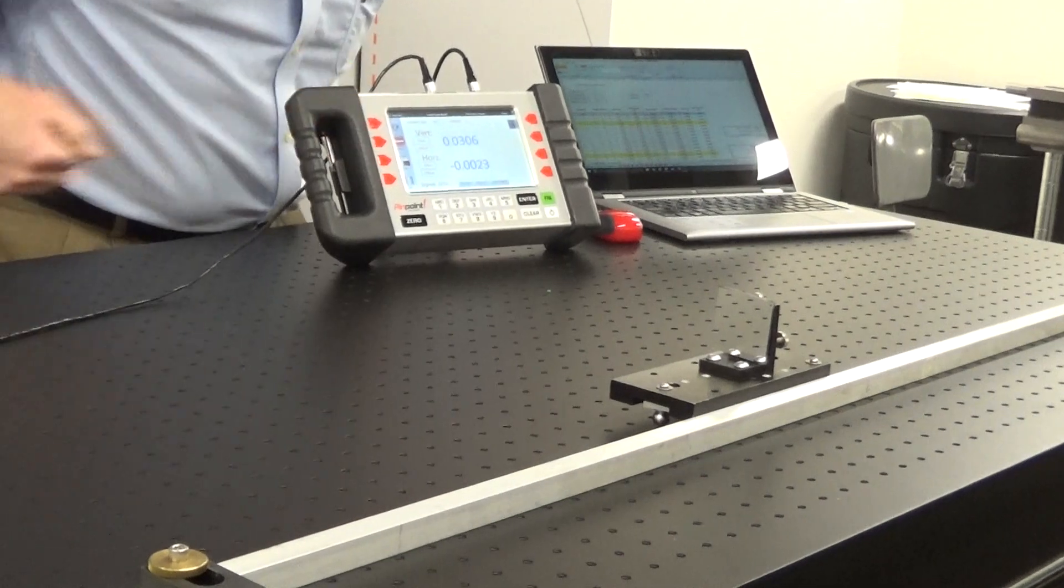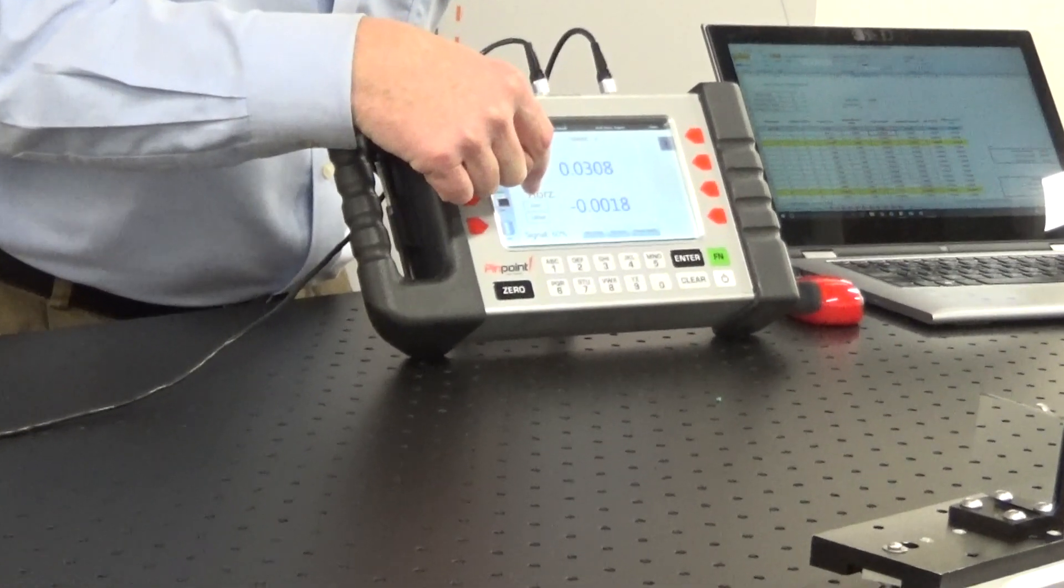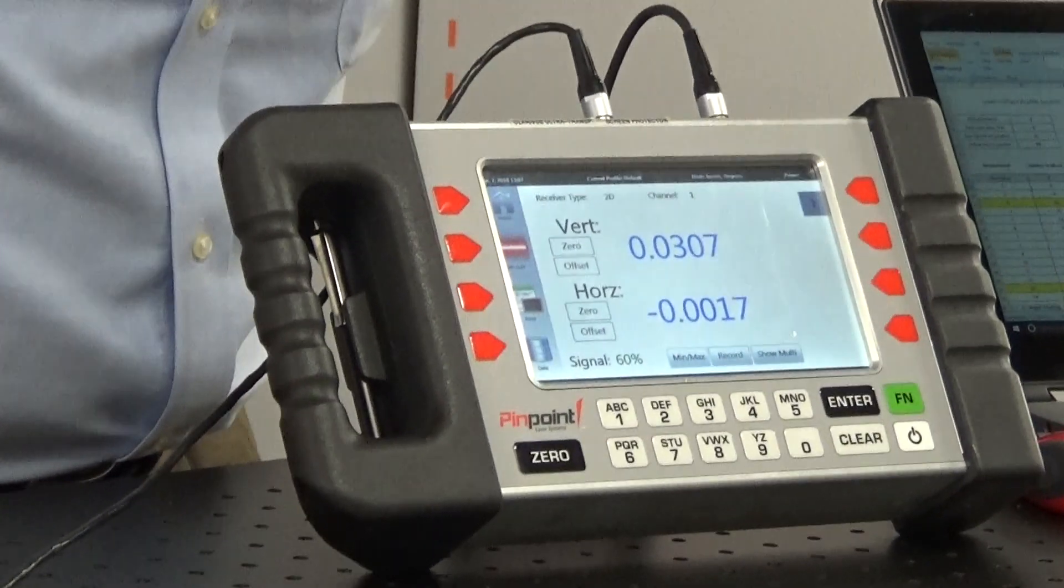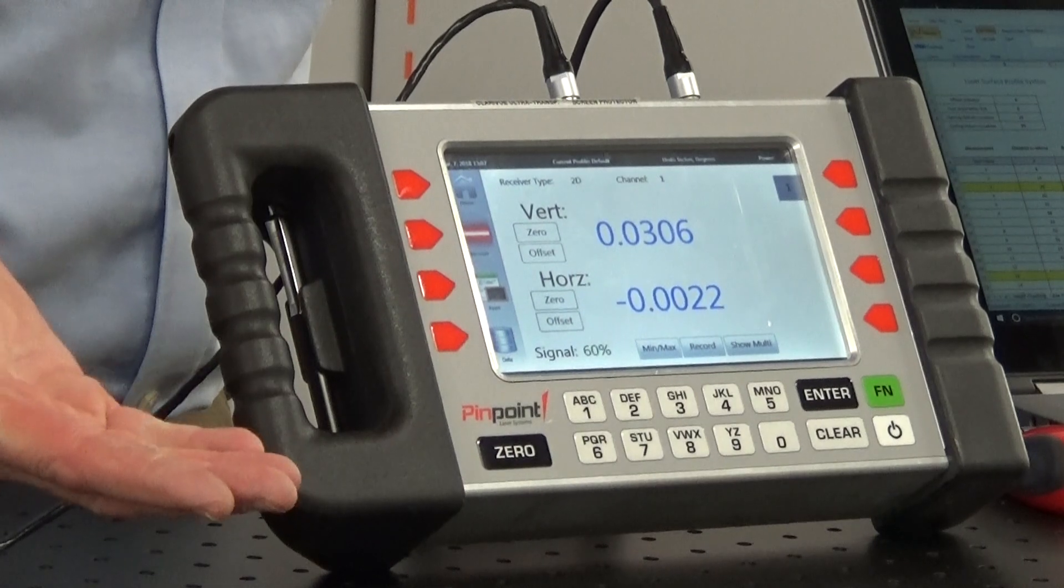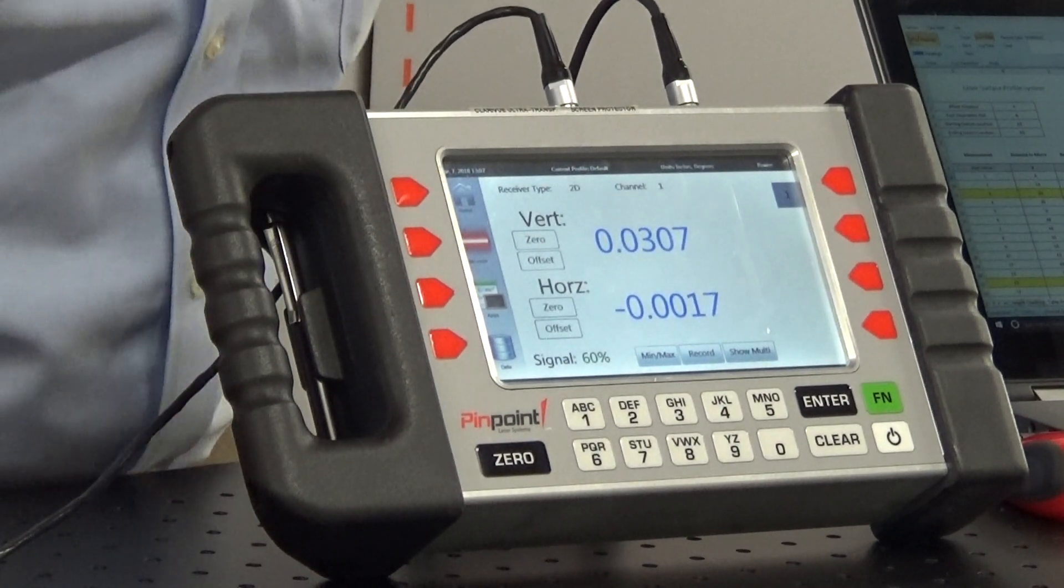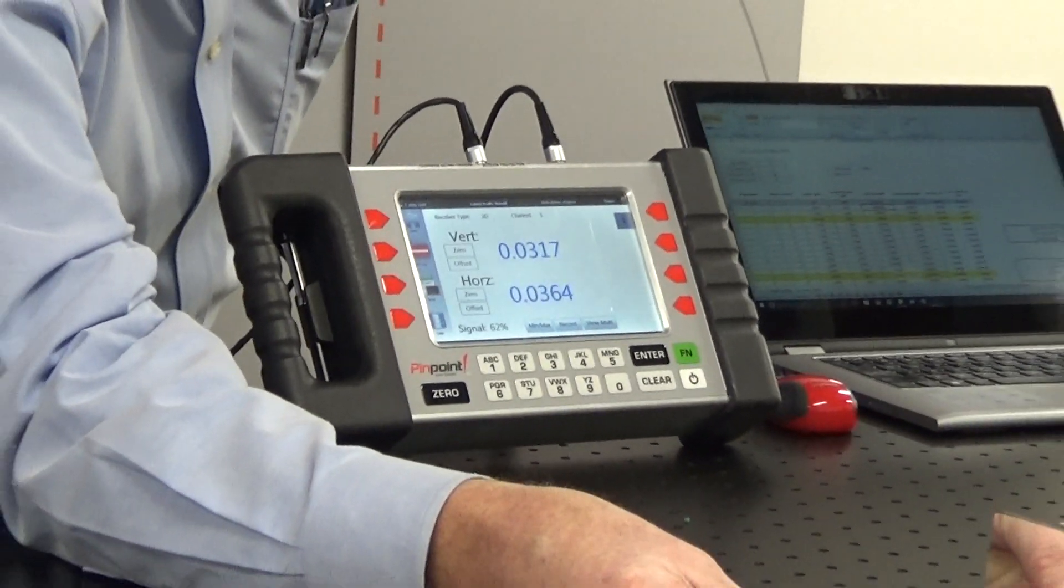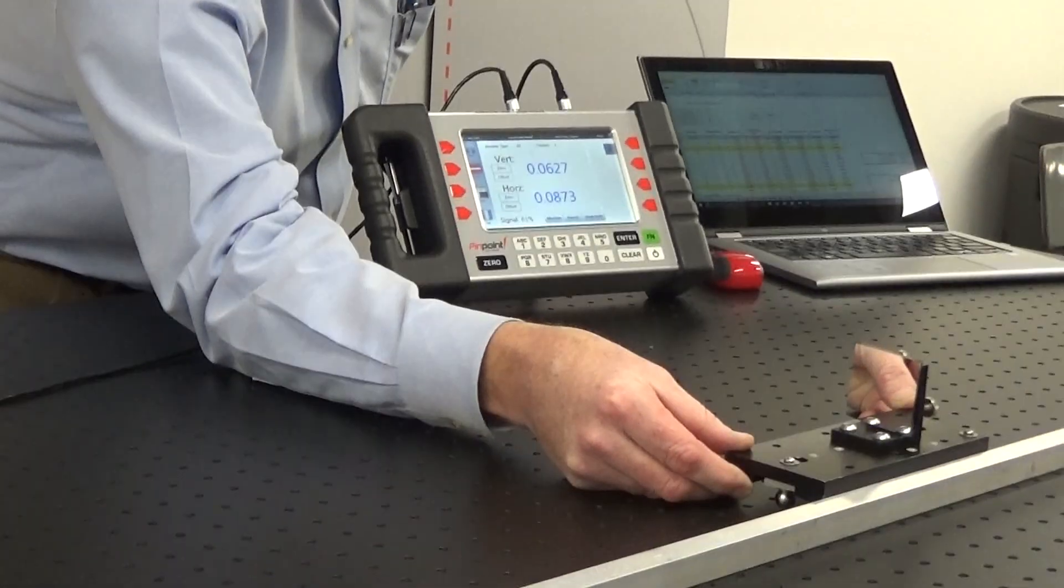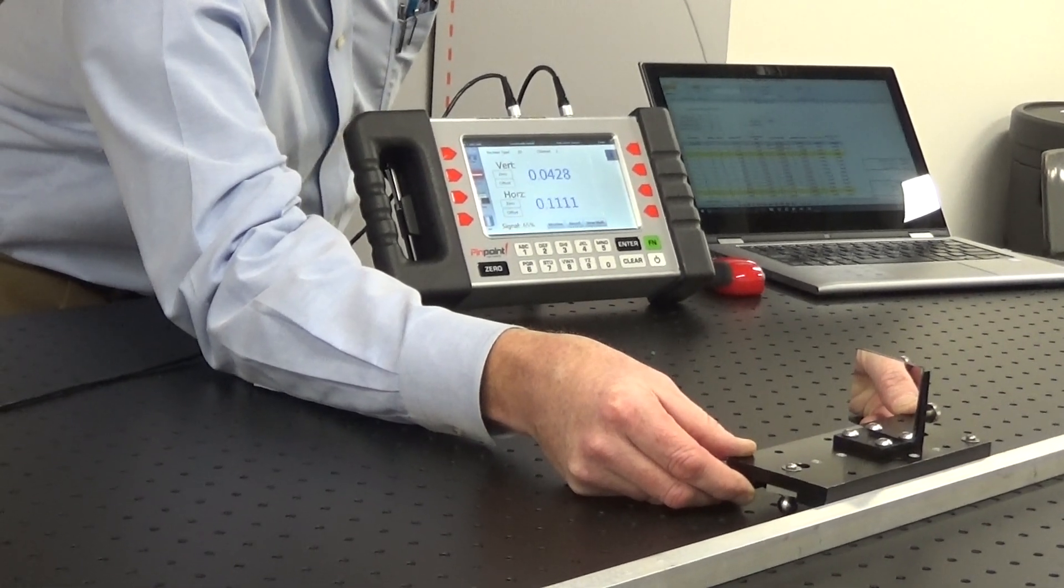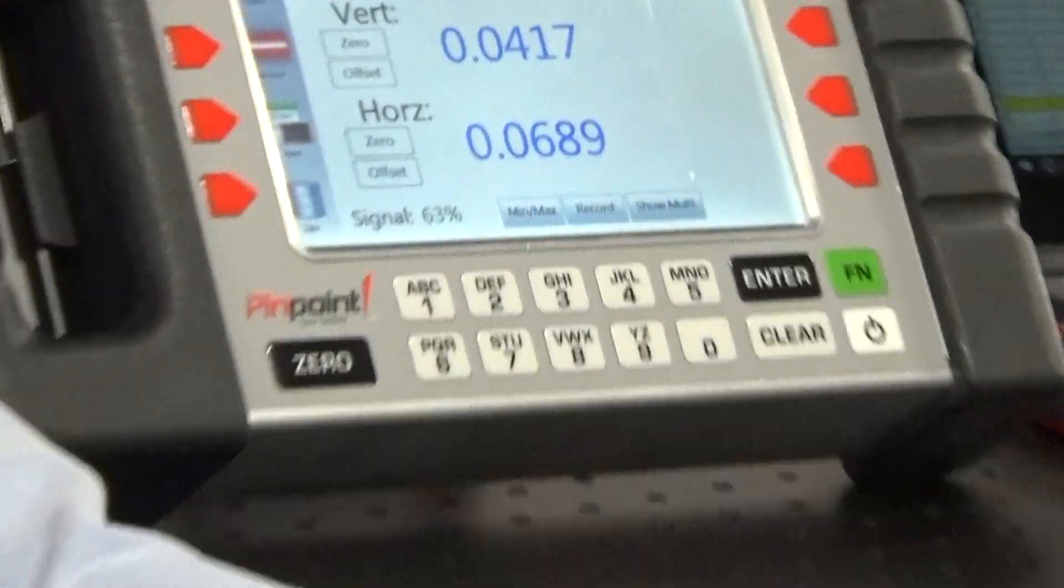The third part of our system is our Micro Gauge Pro display system. This is showing a vertical reading and a horizontal reading coming from the receiver back at the laser. The horizontal reading is not of importance to us, but the vertical reading is. As the laser beam moves up or down, that vertical number will change significantly. I'm just moving this by hand and you can see how sensitive that reading is.